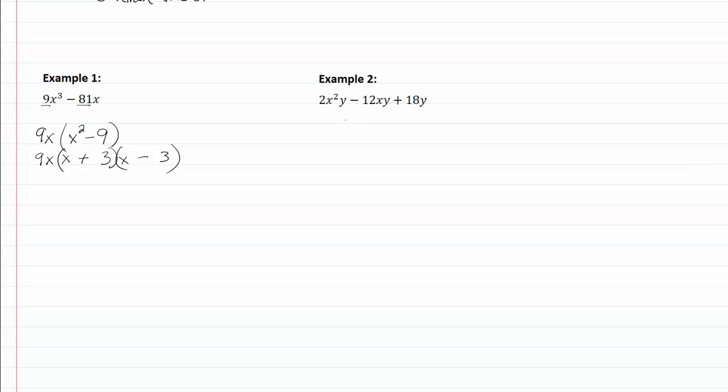If I look at example two, if I'm looking at my numbers here, I can see that they all have a common factor of two. And now they don't have x's in common, but it looks like they all have a y in common. So let's pull out the y, we do that that's going to leave us with x squared minus six x plus nine.